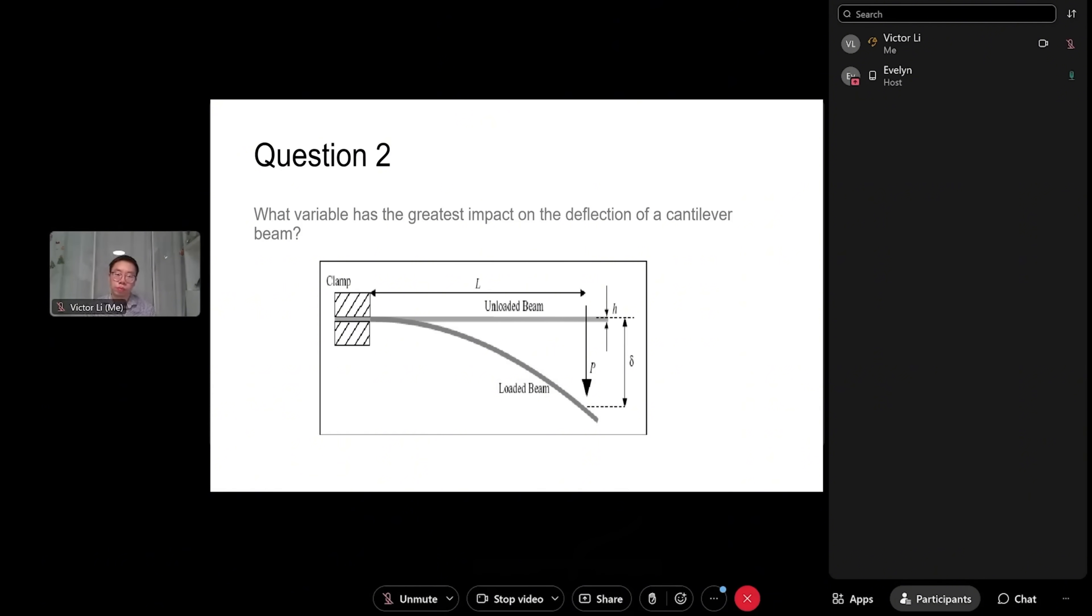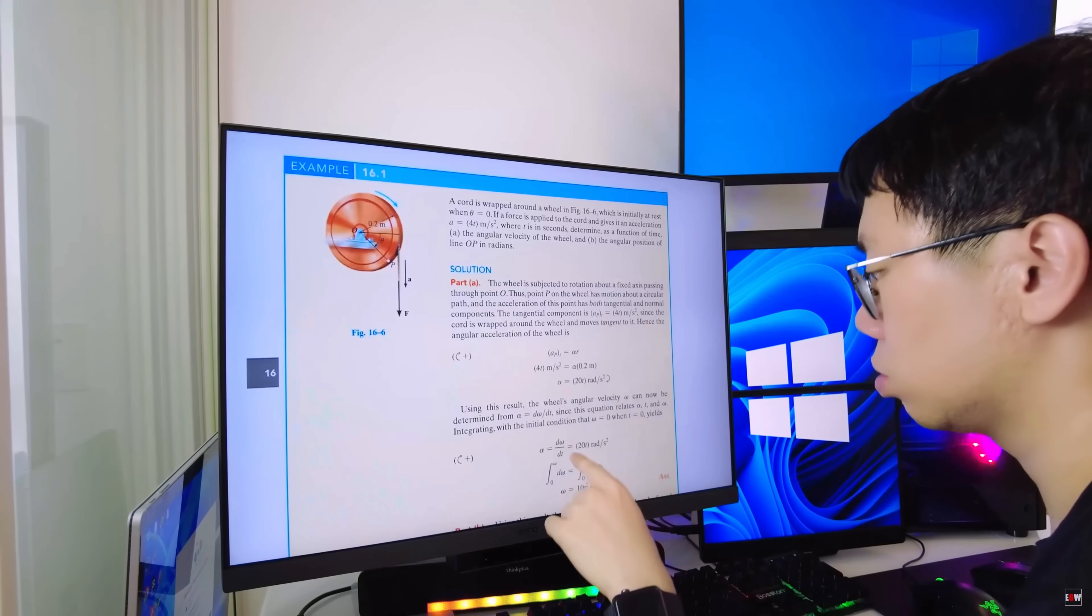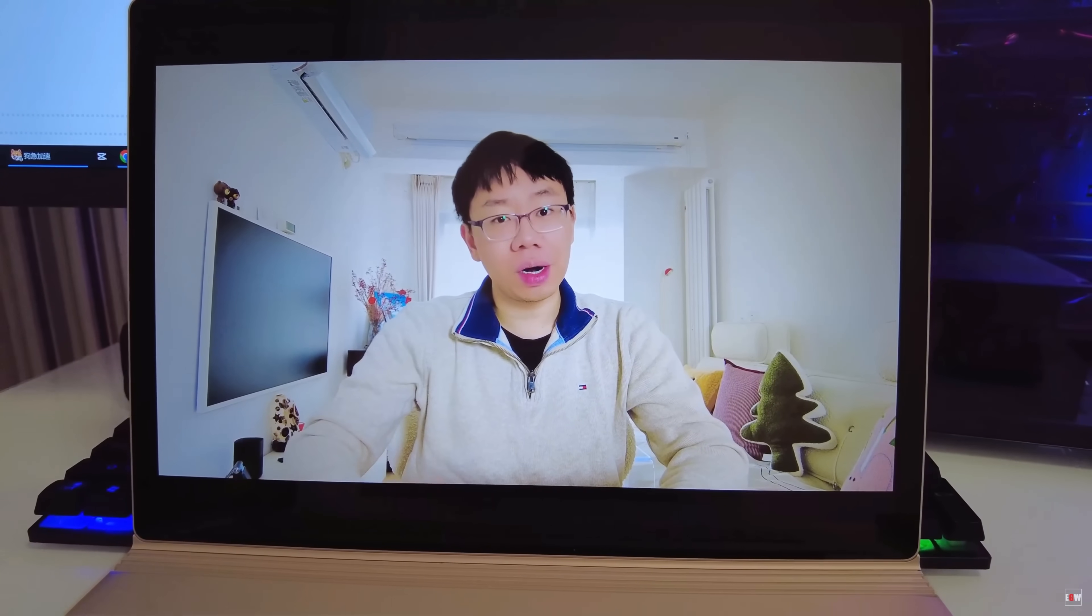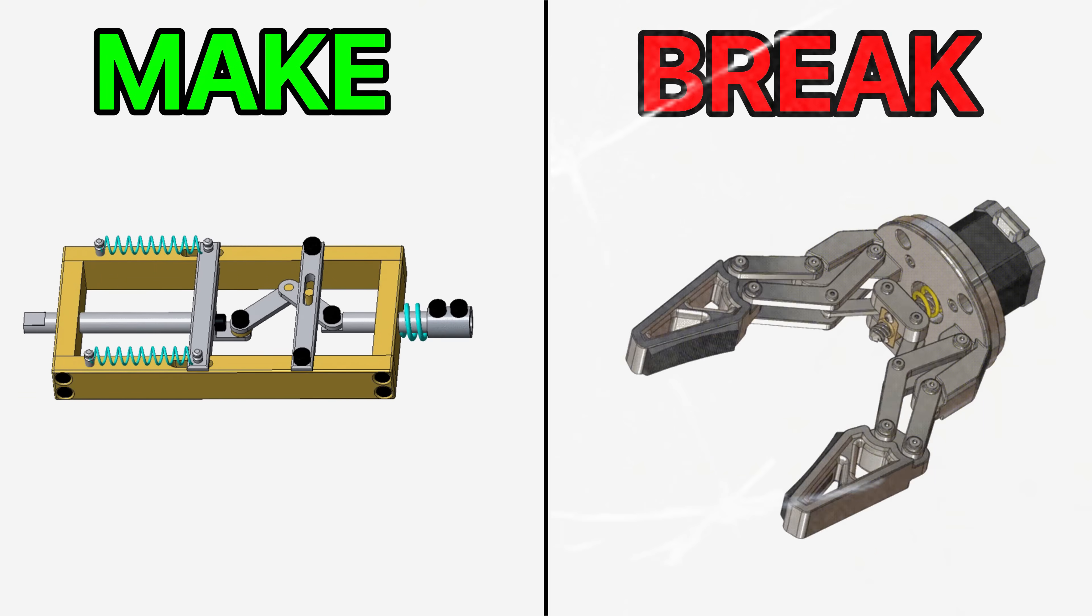Most mechanical engineers don't fail interviews or projects because they don't know theory or equations, but because they've never been pushed to solve the kind of problems that reveal true engineering thinking. Today, we'll walk through four questions that separate the top performing mechanical engineers from everyone else. These cover the things that matter the most in practice, including tolerances, materials, product design, testing, manufacturing, and reliability. If you can't work through these questions, you'll very likely struggle in interviews and definitely on real projects where your decisions make or break a design.